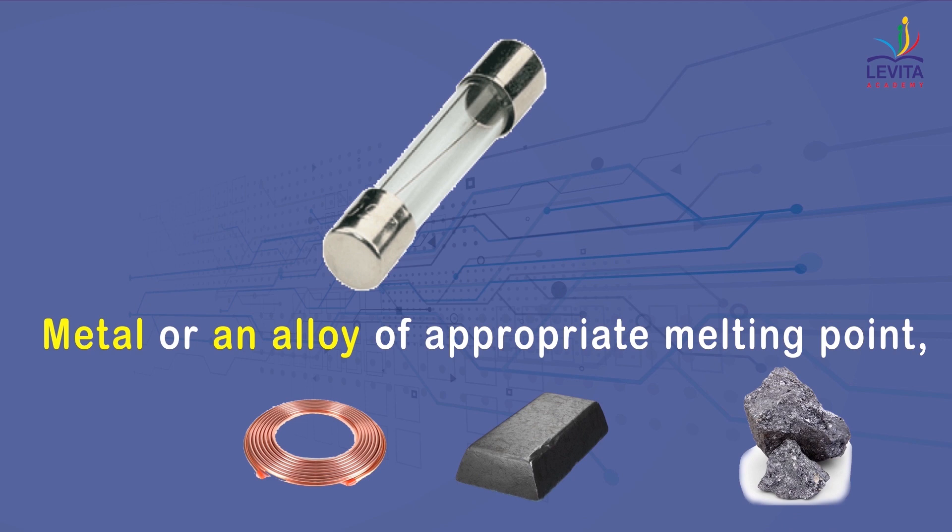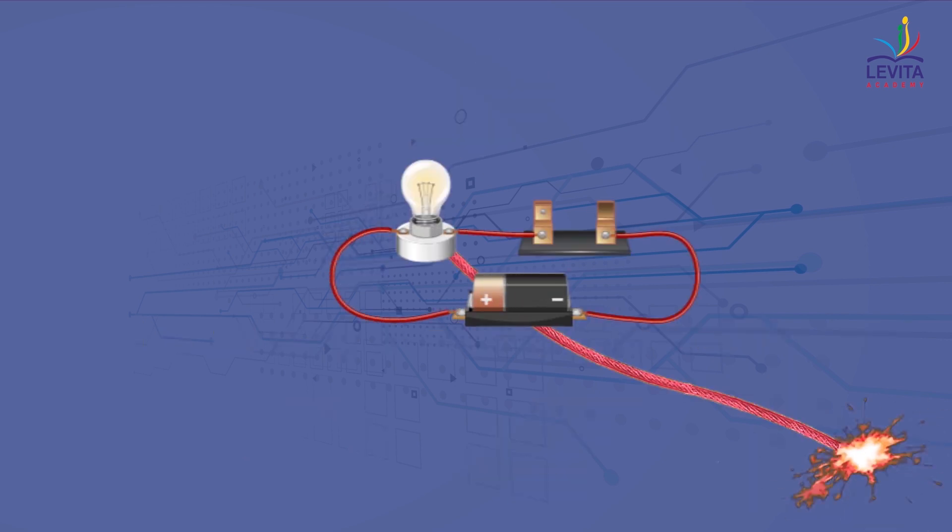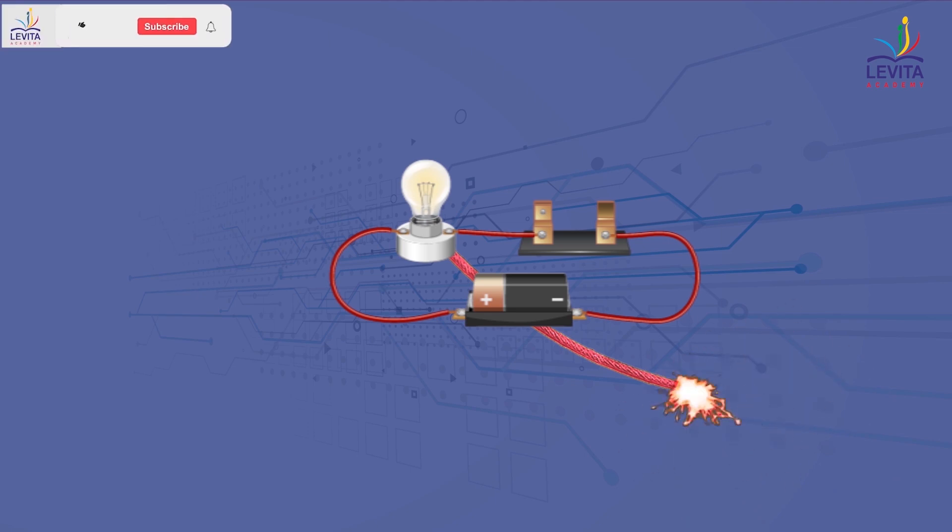So, during voltage surge or when a current larger than the specified value flows through the circuit, the temperature of the fuse wire increases and melts the wire. This leads to breakdown of the flow of current and thus halts the circuit.